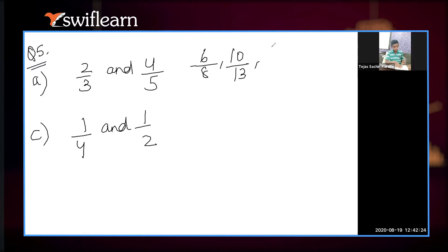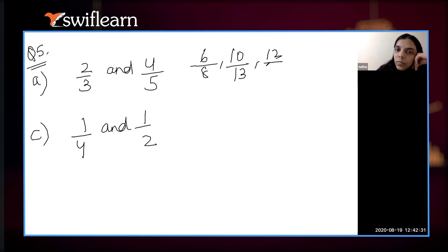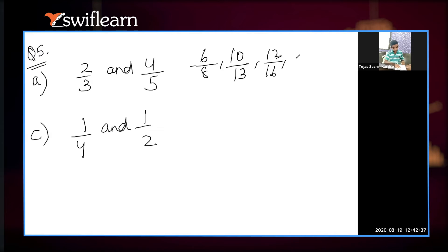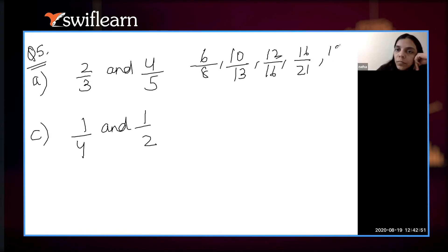2 upon 3 plus 10 upon 13. Then 12 upon 16. Then 4 upon 5 plus 12 upon 16 gives 16 upon 21. And 2 upon 3 plus 16 upon 21 is equal to 18 upon 24.